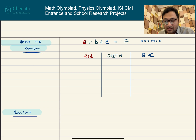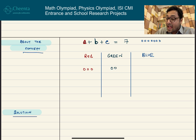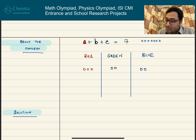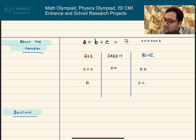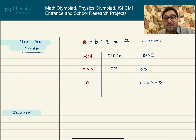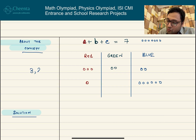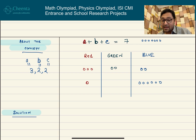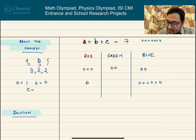One way is to put three balls in the red lake, two in the green lake, and two in the blue lake — that's one scenario corresponding to the solution A=3, B=2, C=2. Another scenario is one ball in the red lake, no balls in the green lake, and all six remaining balls in the blue lake, giving the solution A=1, B=0, C=6.